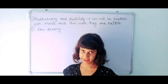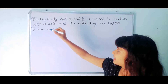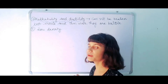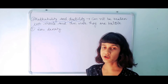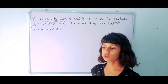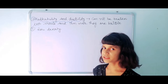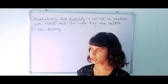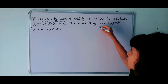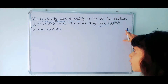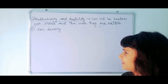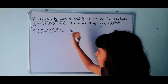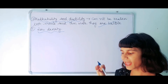The next property is that non-metals lack malleability and ductility — they cannot be converted into thin sheets or wires; they are not ductile and not malleable. Also, they have low density, meaning they are not heavy.